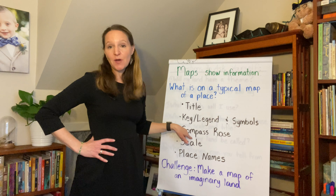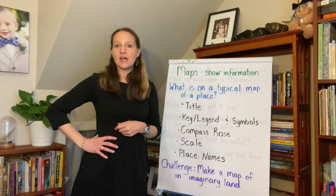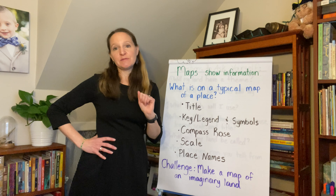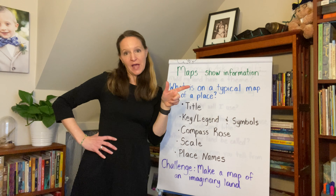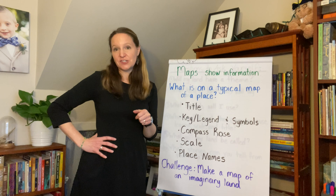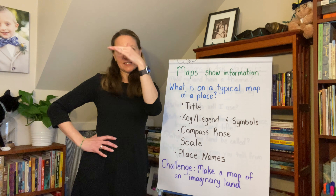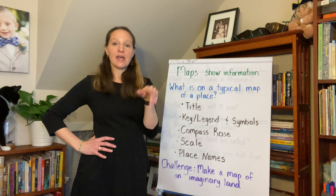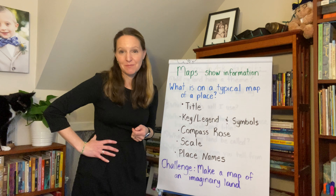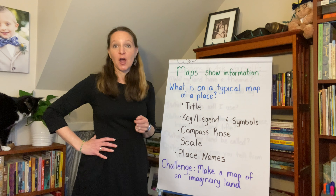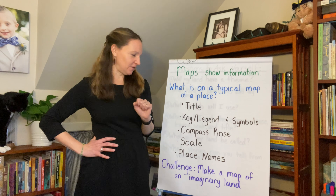Maps also have a compass rose, and that's to give you directions. A compass rose has north on it. Sometimes it will have north, east, south, and west. Sometimes it will have the ordinal directions in between — north, northeast, east, southeast, south, and so on. You'll get to decide what kind of compass rose you want to make. Lots of map makers make their compass roses really elaborate and beautiful, little works of art all on their own.